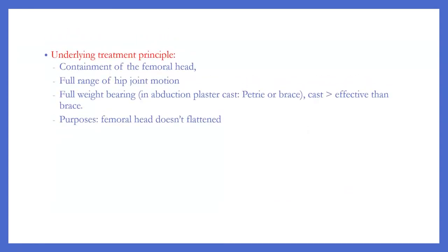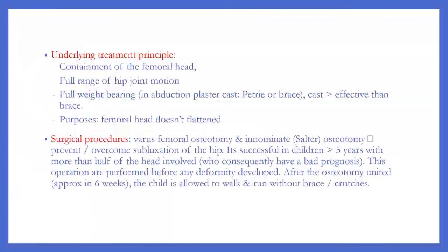The underlying treatment principle is containment of the femoral head, maintaining range of hip joint motion, weight bearing, and use of an abduction plaster cast, battery, or brace. Cast is more effective than brace. The goal is to prevent flattening of the femoral head. Surgical procedures include various femoral osteotomy and innominate osteotomy to prevent or overcome subluxation of the hip. These are most successful in children over 5 years with more than half of the head involved — who consequently have a poor prognosis — and are performed before any deformity develops. After the osteotomy unites, approximately in 6 weeks, the child is allowed to walk and run without brace or crutches.